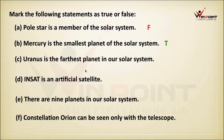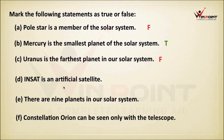Uranus is the farthest planet in our solar system — False, because Neptune is the farthest planet. InSat is an artificial satellite — True.